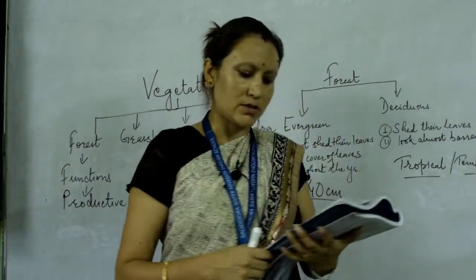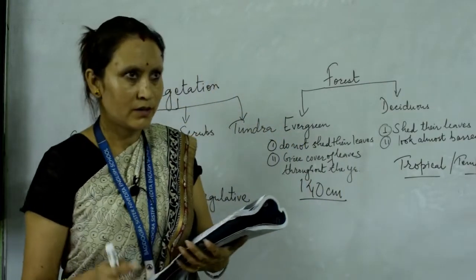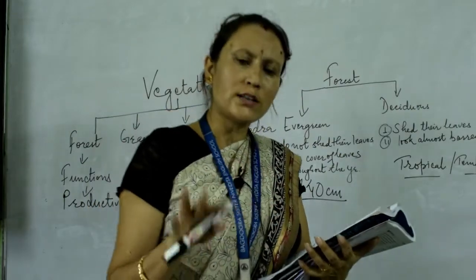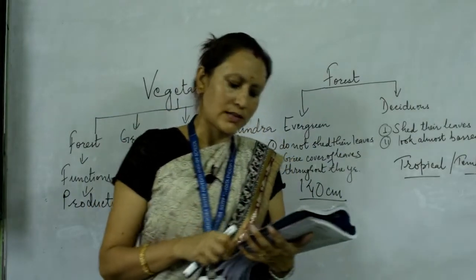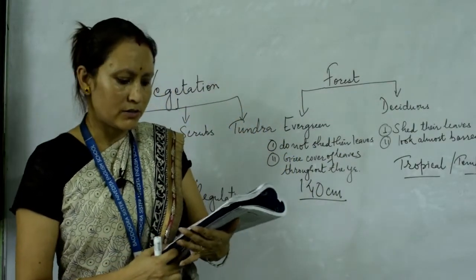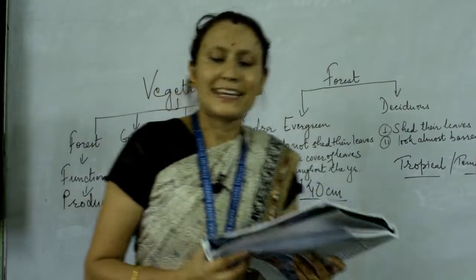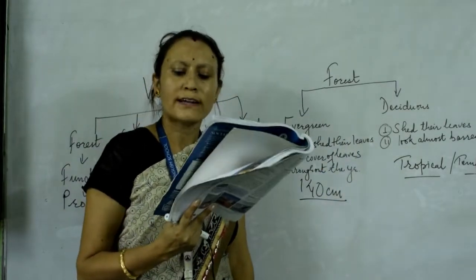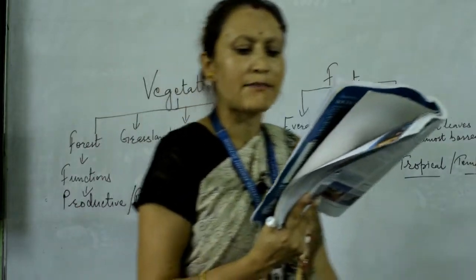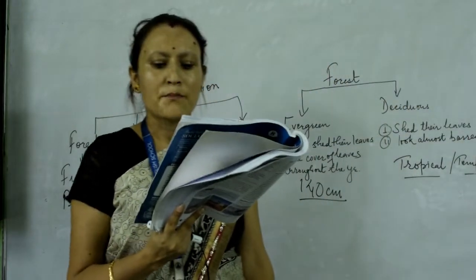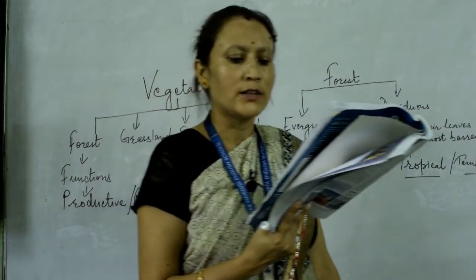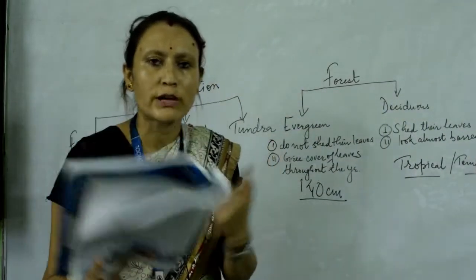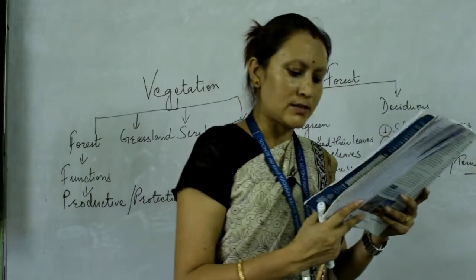What is ecosystem? It is a relationship — an interaction between all the living sources and residents of that particular area. This includes animals, plants, fish, birds, microorganisms, people, and even non-living elements like air, water, and soil. All these together form the ecosystem.